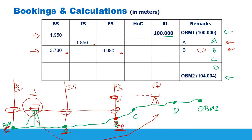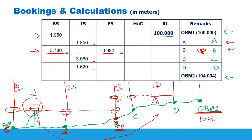For change point B: from the first location of the level we got the fore sight; from the new location we got the back sight. Now we locate the staff over C and collect the reading — this is an intermediate sight. Then we move to D, collect the reading — also an intermediate sight — which is 1.620. Finally we locate the staff over Ordnance Benchmark 2, whose elevation is given as 104.004 meters. The reading over it is 0.750.